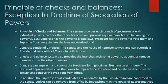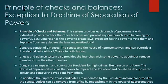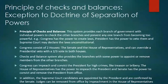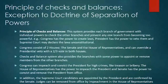Congress consists of two houses — the Senate and the House of Representatives — and can override a Presidential veto with a two-thirds vote in both houses. The checks and balances system also provides branches with power to appoint or remove members from other branches. Congress can impeach and convict the President for high crimes like treason and bribery. The House of Representatives impeaches and the Senate convicts and removes. Supreme Court candidates are appointed by the President and confirmed by the Senate, and judges can be removed by impeachment in the House and conviction in the Senate.